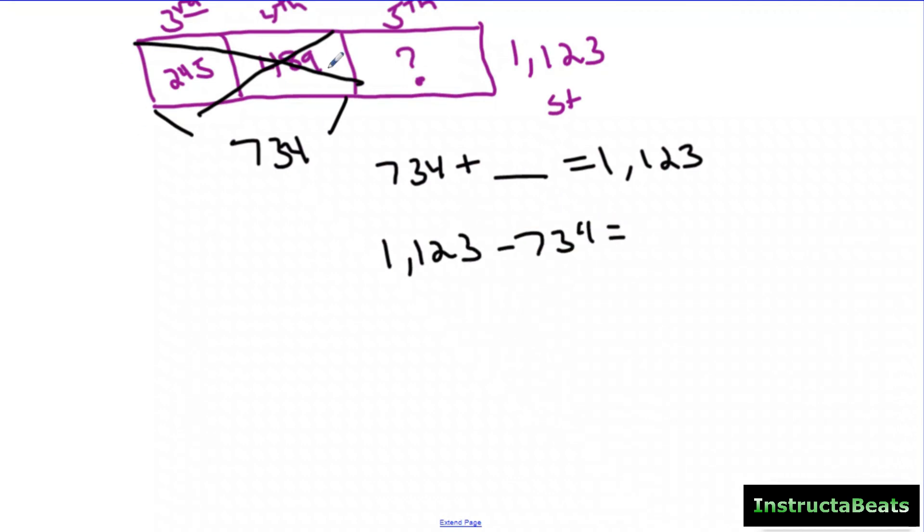You are showing them visually what they're doing. And when you do that, it should be 389. So there are 389 fifth graders. There you go.